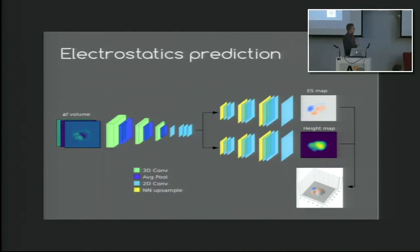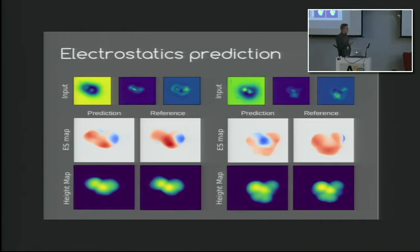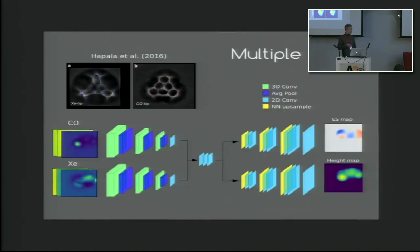And then for the electrostatic prediction, our first attempt is just to do the similar thing, except now just two outputs with the height map and the electrostatic map. But the results are slightly underwhelming. Again, comparing left to right, we mostly get the charge sign right in regions, but sometimes we completely get it also wrong. The height map prediction is fairly accurate, but we have another idea in this regard.